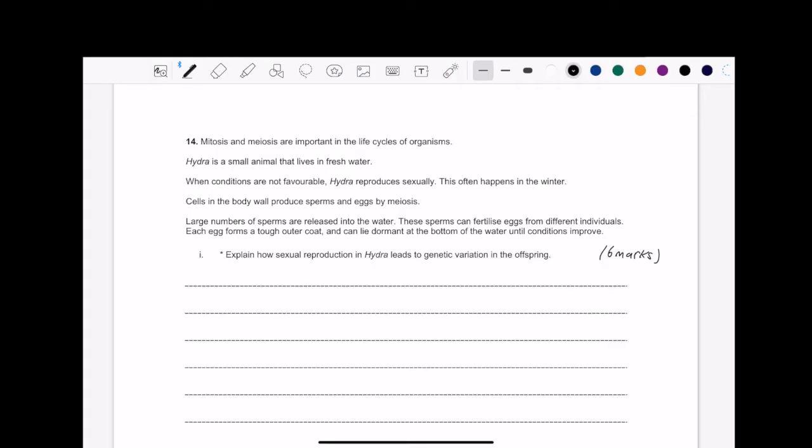Now I'm going to read the information. So it says mitosis and meiosis are important. Fantastic. We already know that. It says that Hydra is a small animal. Now this is where I think they're very interesting. So it said when conditions are not favorable, the Hydra reproduces sexually. And this often happens in winter.